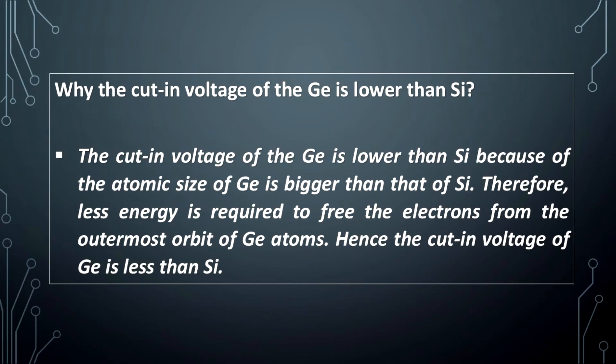Why is the cut-in voltage of germanium lower than silicon? The cut-in voltage of germanium is lower than silicon because the atomic size of germanium is bigger than that of silicon. Therefore, less energy is required to free the electrons from the outermost orbit of germanium atoms. Hence, the cut-in voltage of germanium is less than silicon.